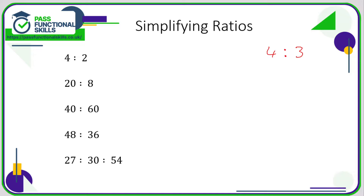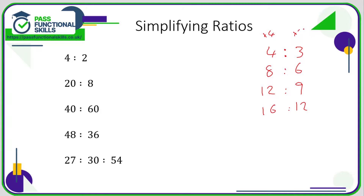So if I give you four and give myself three, and do that again, you would have eight and I would have six. Do it again, you'd have twelve and I'd have nine. Again, you'd have sixteen and I'd have twelve. So all it is is just a comparison between the four times table and the three times table. One of the easiest skills in ratios is simplifying a ratio.